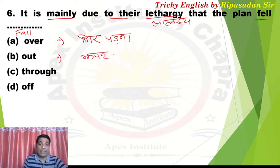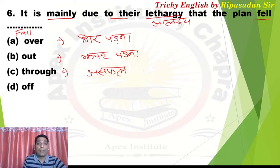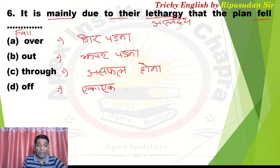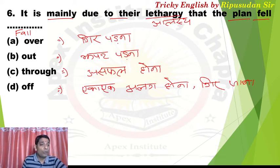'Fall through' means to fail. This is very important and many students are weak in this area — please memorize. 'Fall through' means to fail. 'Fall off' means to suddenly separate or fall down from something, like falling off a tree, a roof. So when a plan fails, we use 'fall through'. Answer for Q6 is 'fall through'.